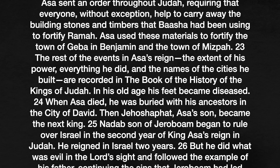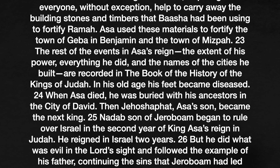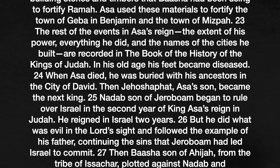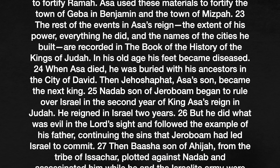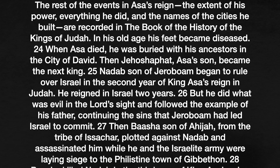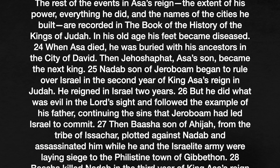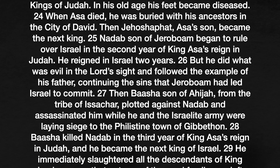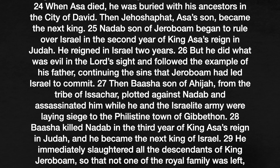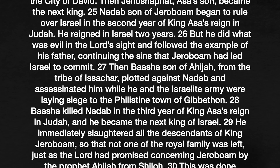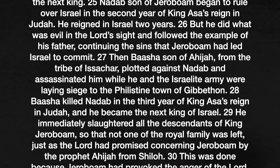Then King Asa sent an order throughout Judah, requiring that everyone without exception help carry away the building stones and timbers that Baasha had been using to fortify Ramah. Asa used these materials to fortify the town of Geba in Benjamin and the town of Mizpah. The rest of the events of Asa's reign, the extent of his power, everything he did, and the names of the cities he built are recorded in the book of the history of the kings of Judah. In his old age, his feet became diseased. When Asa died, he was buried with his ancestors in the city of David. Then Jehoshaphat, Asa's son, became the next king. Nadab, son of Jeroboam, began to rule over Israel in the second year of King Asa's reign in Judah. He reigned in Israel two years, but he did what was evil in the Lord's sight and followed the example of his father, continuing the sins that Jeroboam had led Israel to commit.